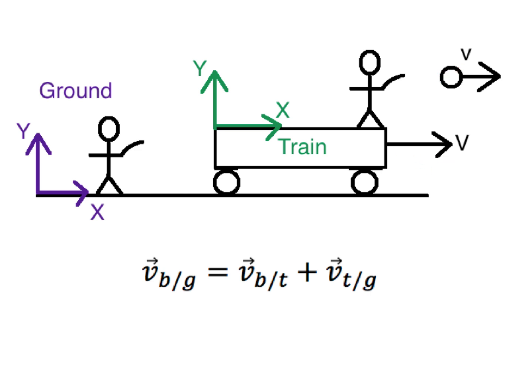Here I have an example of a guy on a train who throws a ball off the train, which is itself moving. We want to measure the velocity of the ball. To measure the velocity of anything, we need a coordinate system with an origin as a reference frame. In this picture, there are two obvious places to put a coordinate system: you can fix it to the train so it moves with the train, or fix it to the ground.